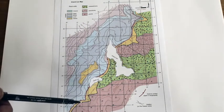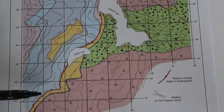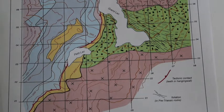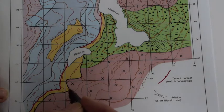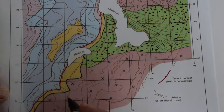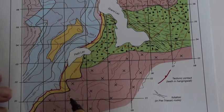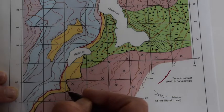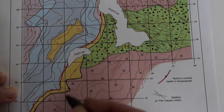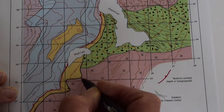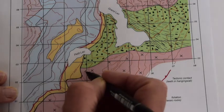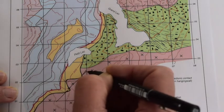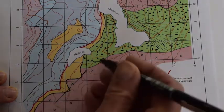There are various places we can start but a good place is down here where the boundary intersects a number of topographic contours. I can see here that the contact comes across the 2600 meter contour twice. We can pick a couple of points where the boundary intersects 2600 and join these up to make a structure contour running like this through this small part of the map.